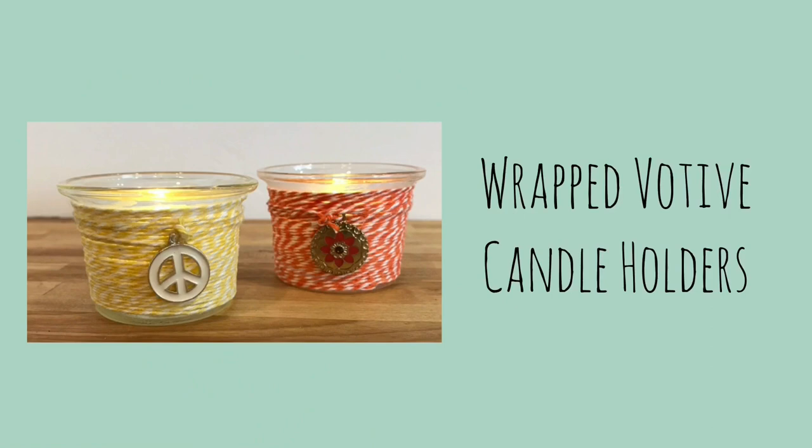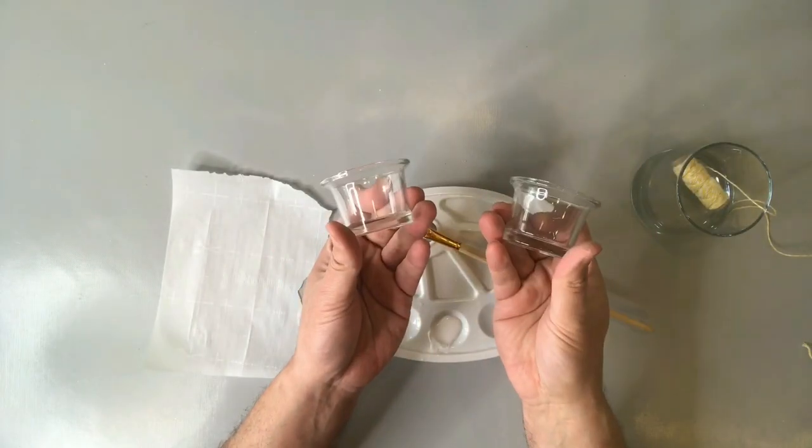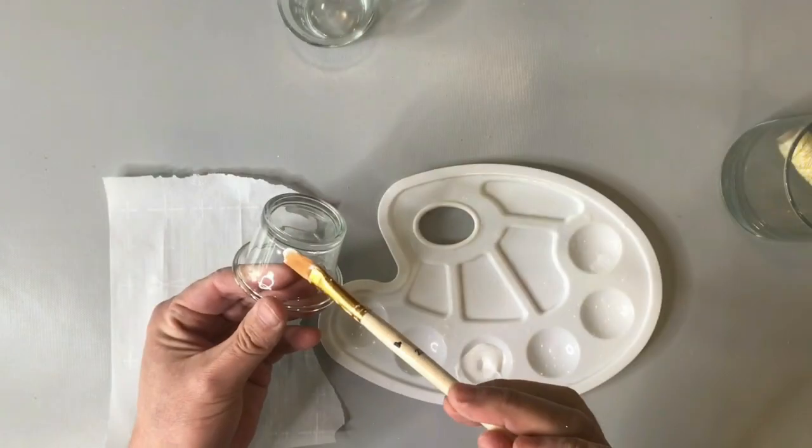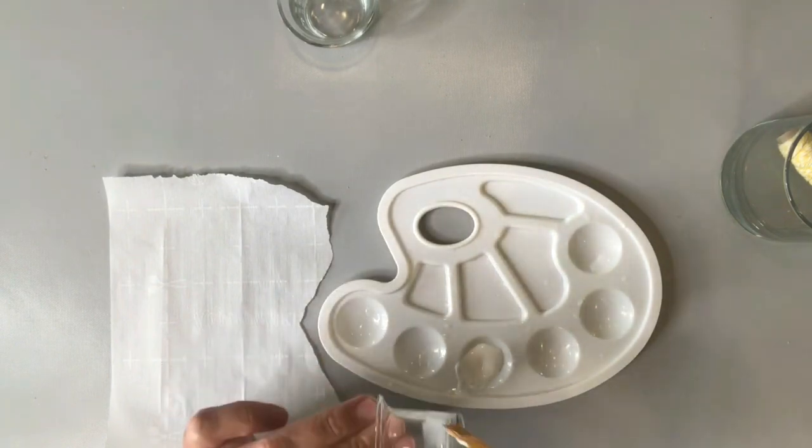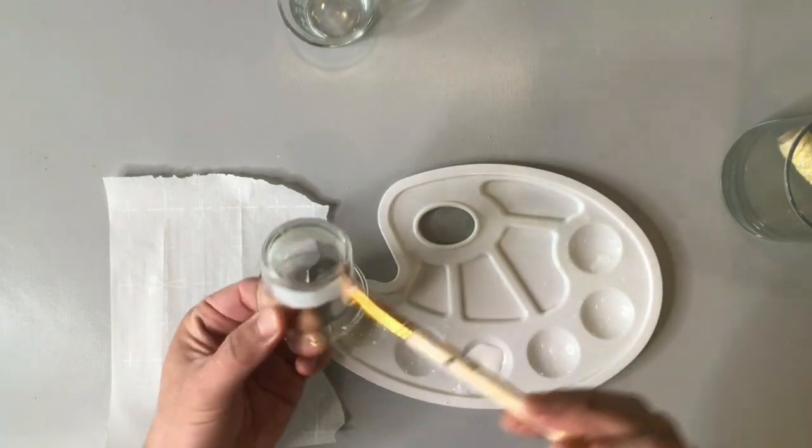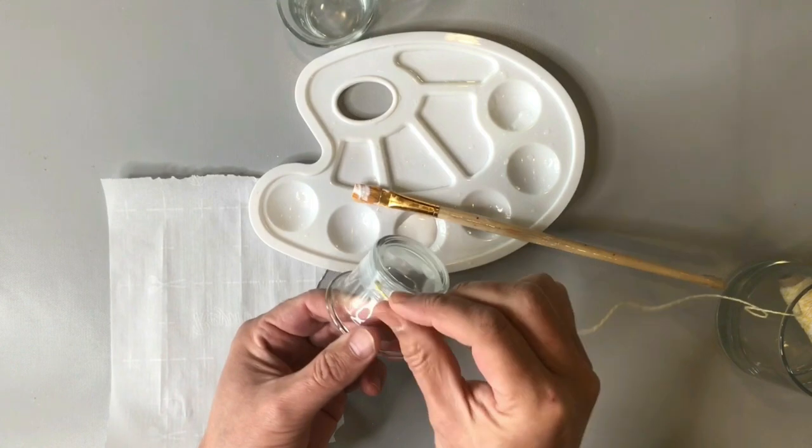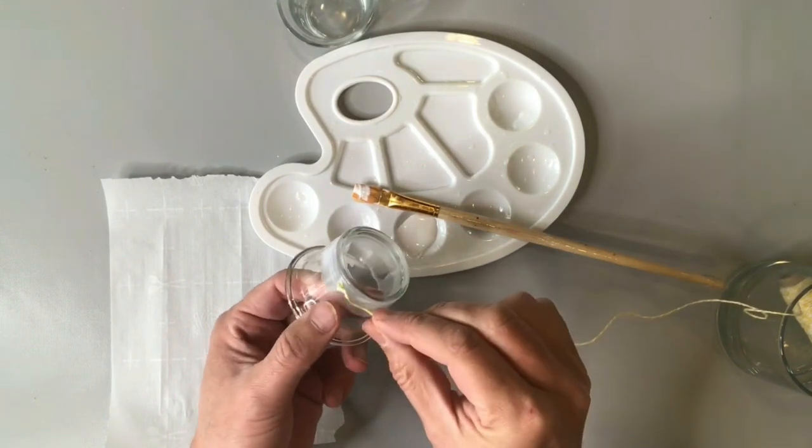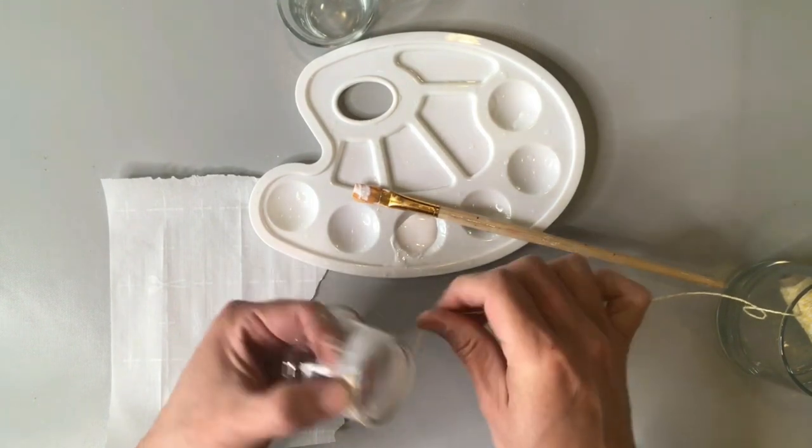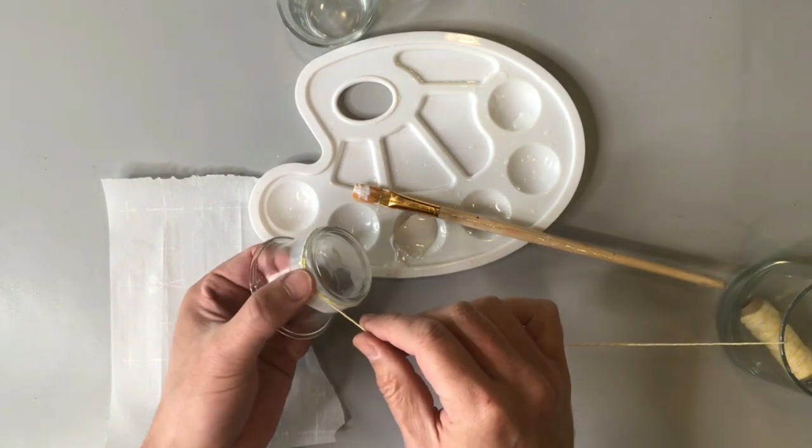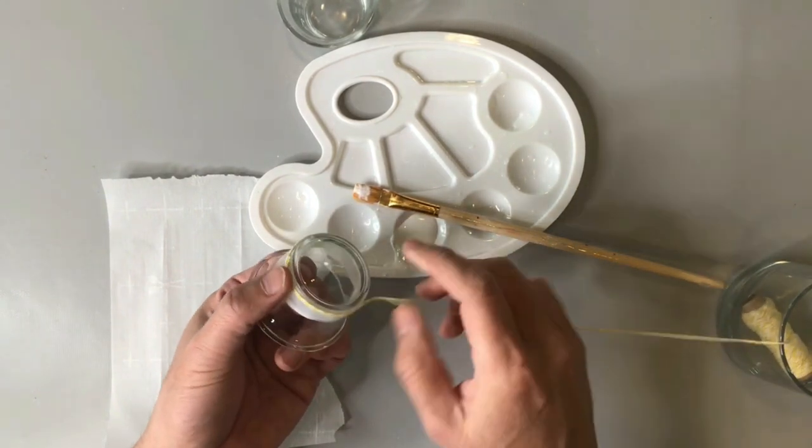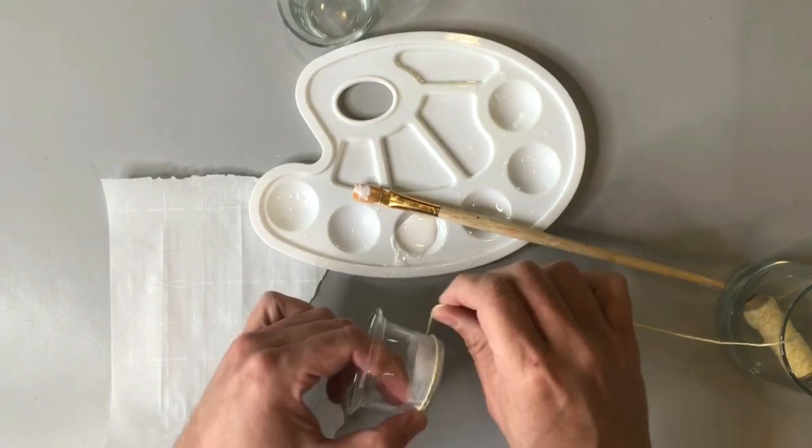For this project, I'm using Baker's Twine to wrap these beautiful glass votive candle holders. And these candle holders come from Dollar Tree. I found them in a pack of five, believe it or not. And I'm going to be adding a thin stripe of tacky glue at the base or at the bottom of our votive candle holders. While that tacky glue is still wet, I'm going to be adding that Baker's Twine, slowly wrapping around the base of the votive candle holder.